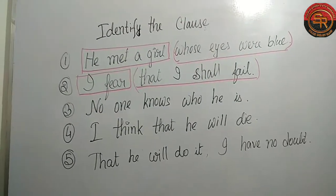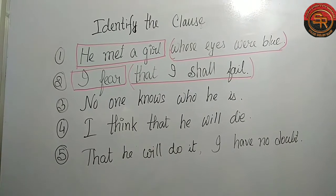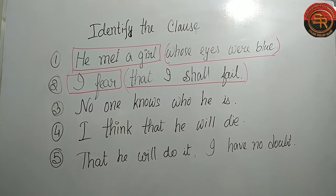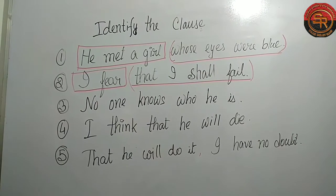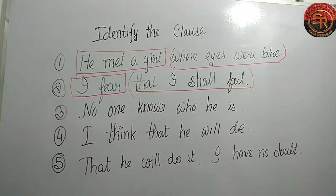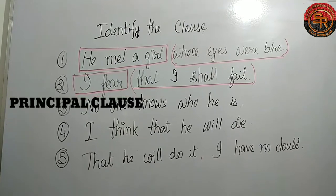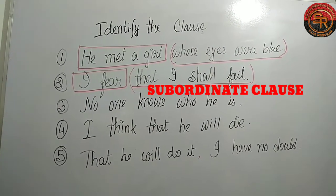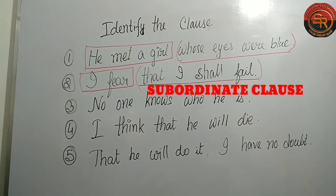A clause always carries a finite verb. In 'I fear,' the word 'fear' is the finite verb. In the next clause 'I shall fail,' 'shall fail' is the finite verb. So 'I fear' is our principal clause, and 'that I shall fail' is our subordinate clause.